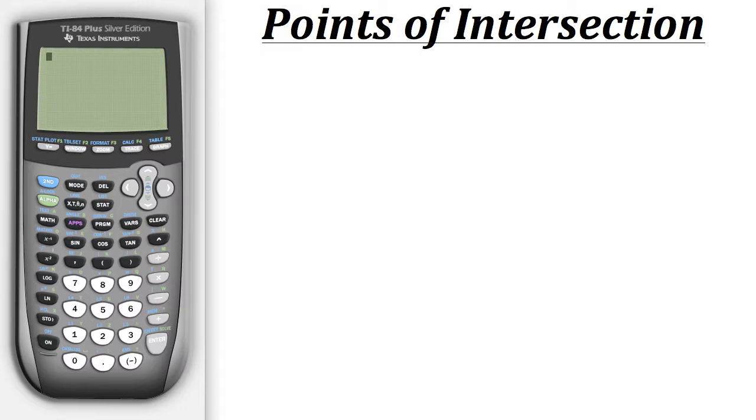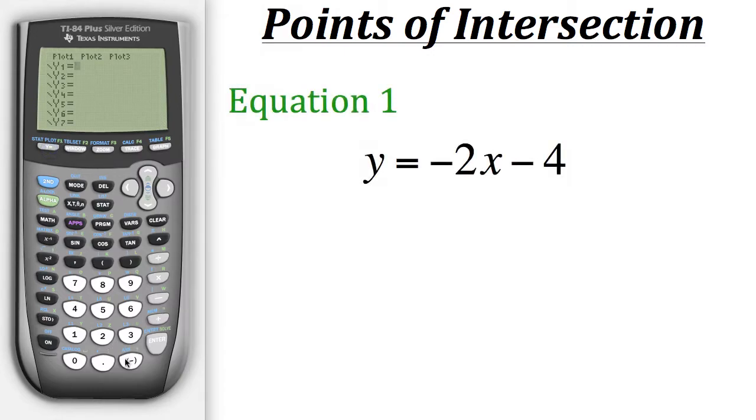Now we can do this by first graphing the two equations together on the same coordinate plane. And then from there we'll use the graph to find the intersection points. So let's start off by putting in our first equation into the y equals. Here we have y equals negative 2x minus 4. Now that we have our first equation in, let's put in the second equation, which is y equals x squared minus 7.